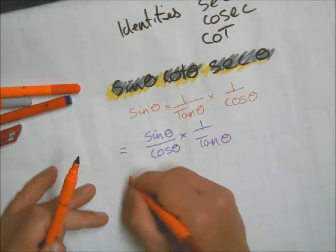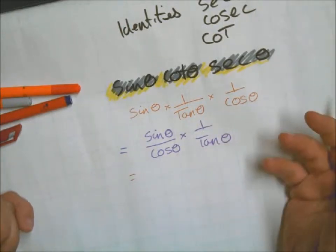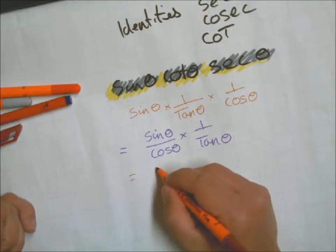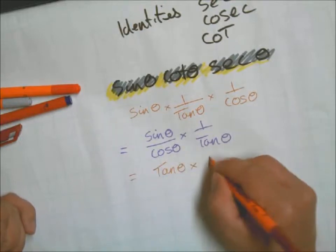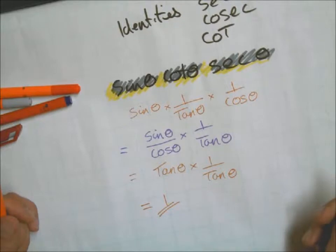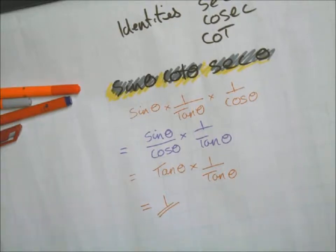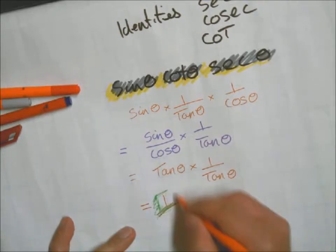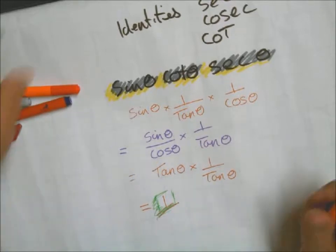Hopefully you will have remembered from your identities work that this particular combination of trig was going to give us tan theta. And then we've got one over tan theta there. Boom, it falls out and we get one. That's what this sort of thing is about: taking some of the information we know and making it look a lot simpler.